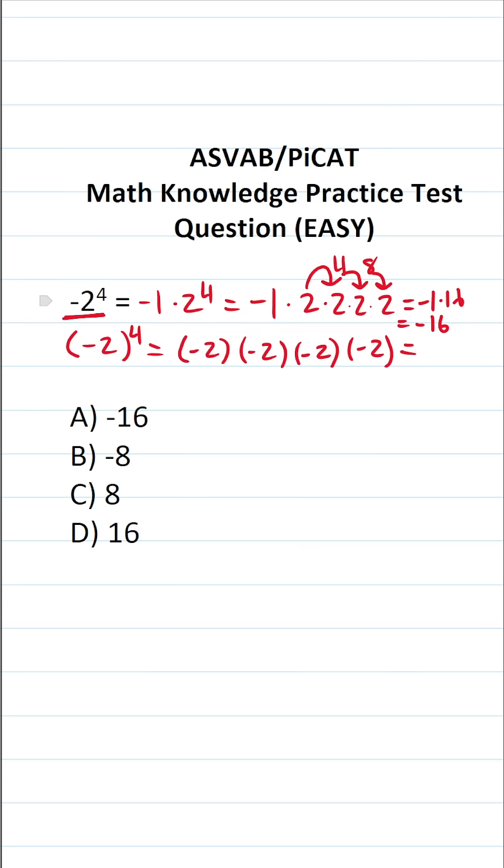So negative 2 to the fourth power, where the negative is not included in parentheses, is negative 16. This one is answer A. What do we get when we have the negative inside parentheses?